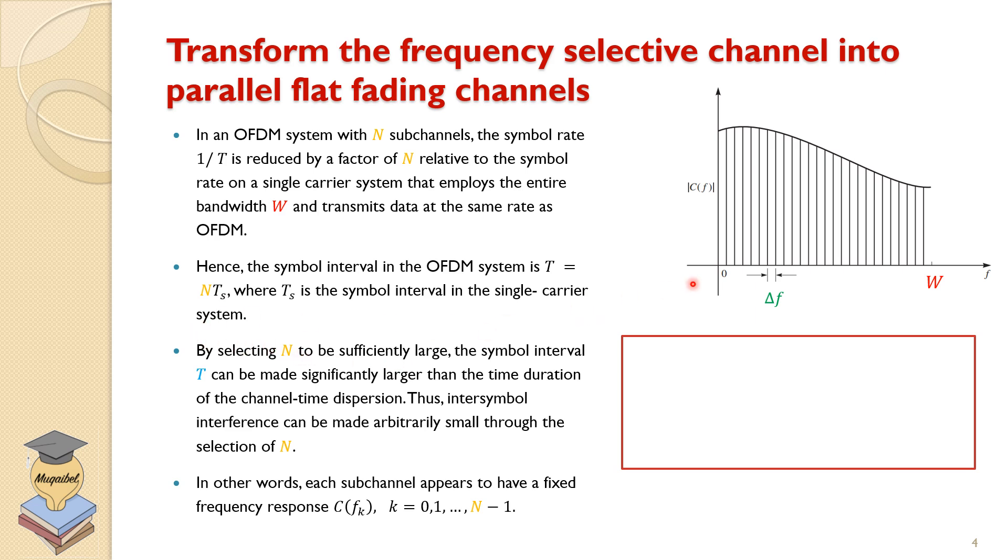Now, by selecting N, how many sub-bands should we have? We should make sure that N is large enough so that the symbol interval can be made significantly larger than the time duration of the channel dispersion. Or in the frequency domain, we have to make sure that the sub-band is almost flat in terms of amplitude and linear phase response. If you want to say that in time domain, we have to make sure that the symbol interval should be made significantly larger than the channel time dispersion, which means all the echoes will have disappeared. Thus, inter-symbol interference can be made arbitrarily small through the selection of N. The smaller the value of the bandwidth, the larger the value of N, the more ideal the response of the channel. In other words, each sub-channel appears to have fixed frequency response.